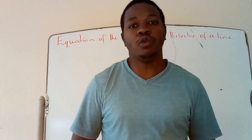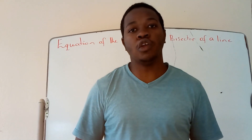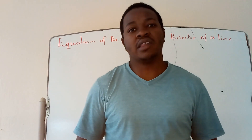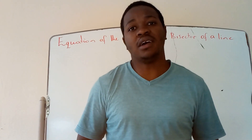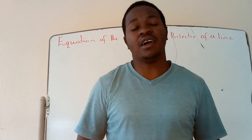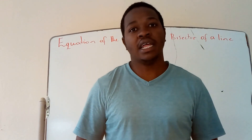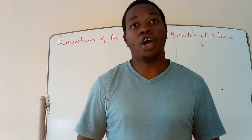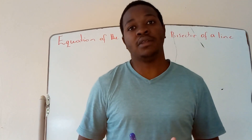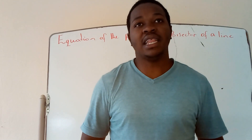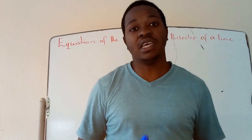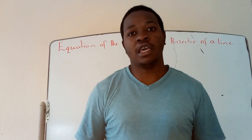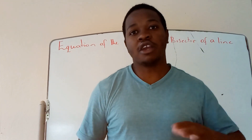Hello everyone, welcome to another lesson. In this lesson we are going to look at the perpendicular bisector of a line. The perpendicular bisector of a line is simply a straight line that intersects that given line at 90 degrees. It also passes through the center of that line, so in other words it is a line that cuts a line or line segment in two equal parts.